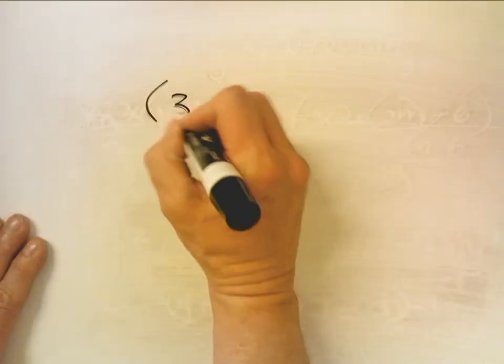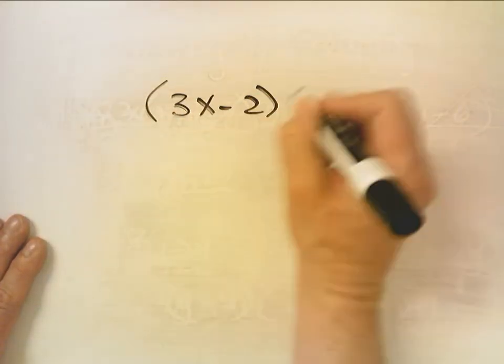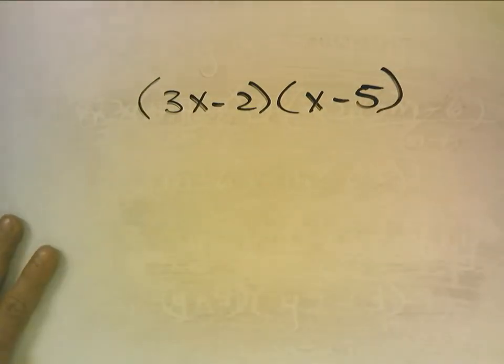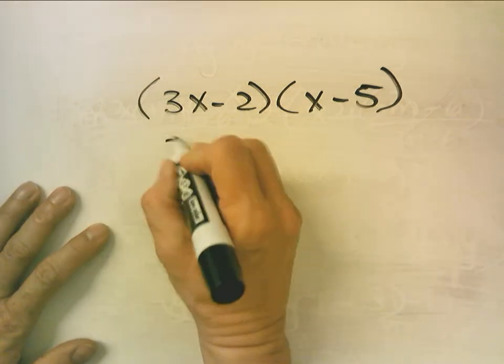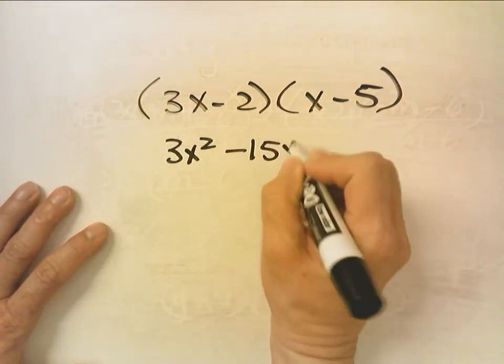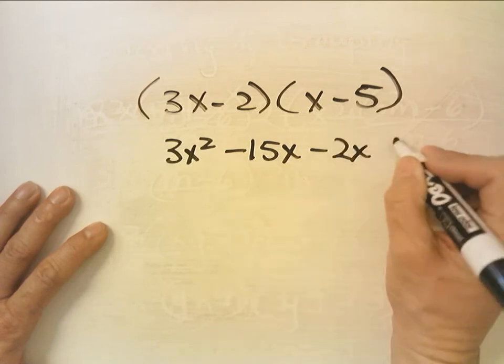Now, suppose I have this, and I ask you to FOIL that. Well, you know that becomes 3x squared minus 15x minus 2x plus 10.